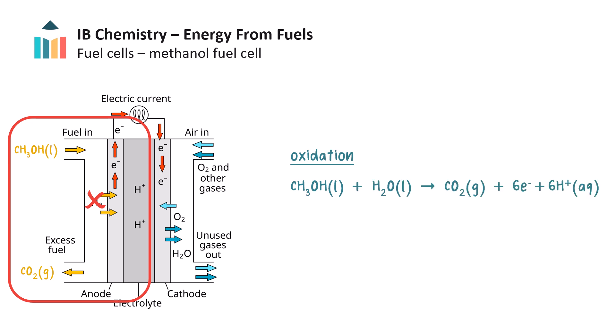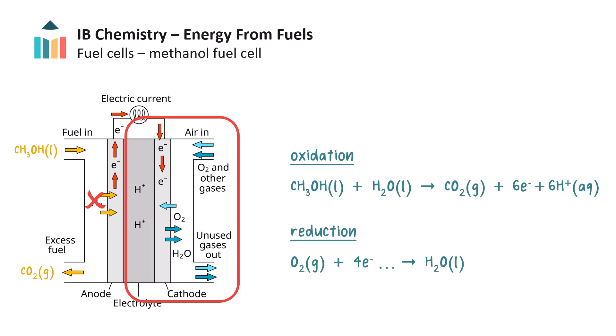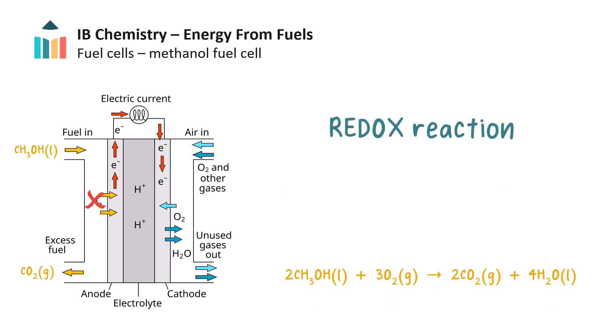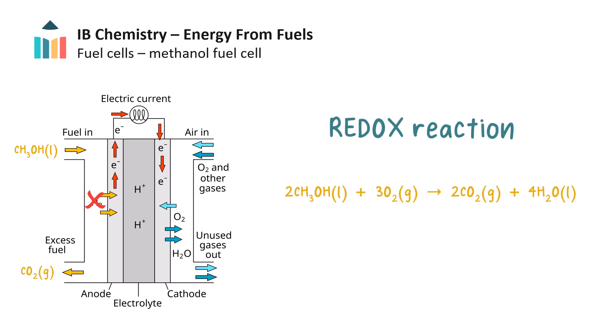To balance the charges, six hydrogen ions from the acidic solution are added to the right, and to balance hydrogen and oxygen, water is added to the left. Oxygen gas is reduced at the cathode, and water forms; the charges are balanced with hydrogen ions. Now we can add the two half equations, and finally we get the net redox reaction for the methanol fuel cell.